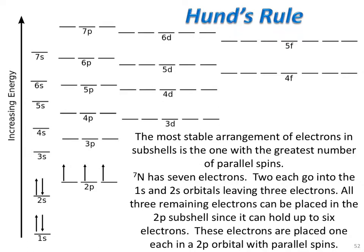Since there are three different 2p orbitals, we are going to put one electron in each orbital with the same spin. They can either be all spin up, as seen in the diagram, or all spin down. Either way is acceptable, as long as they all have the same spin.